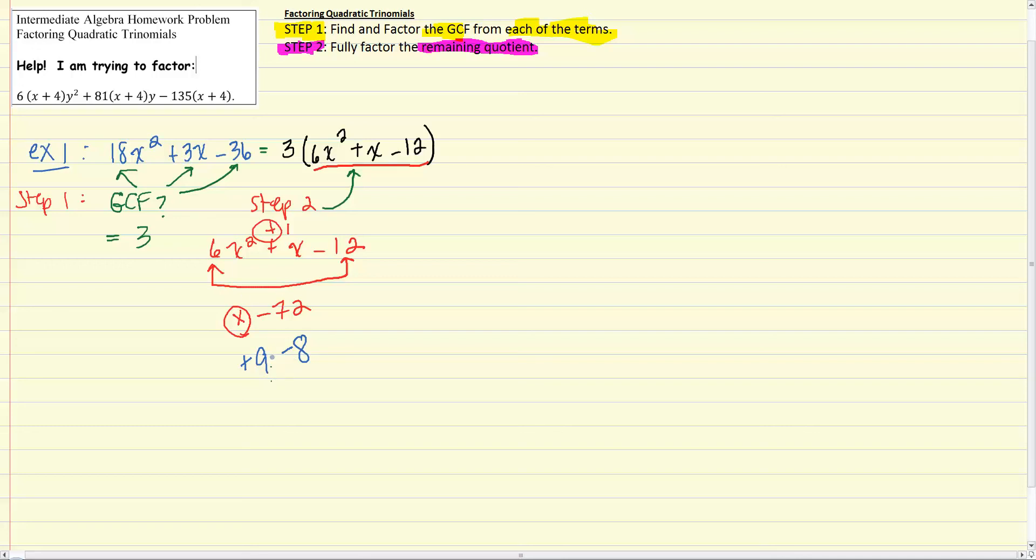So what we do now with the 9 and the negative 8 is we rewrite this middle term here as the sum of these two numbers. Technically speaking, we have a 1 coefficient here, so what we really want to do is rewrite the coefficient as plus 9 and negative 8. So it's 6x squared plus 9x minus 8x minus 12.